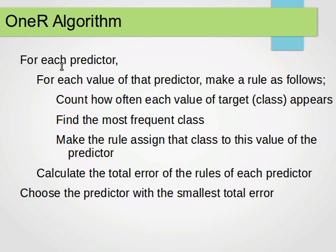The algorithm is as follows. For each predictor, for each value of that predictor — and if it's numerical, transform it into categorical — make a rule: count how often each value of the target class appears, find the most frequent class, and make the rule assign that class to this value of the predictor. Then calculate the total error of the rules for each predictor and choose the predictor with the smallest total error.